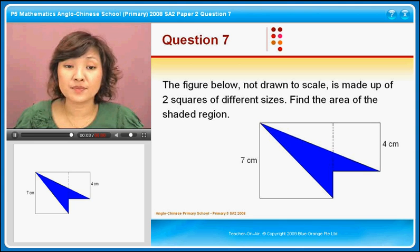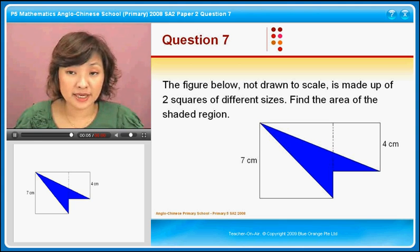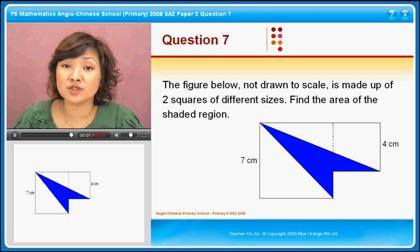Let's move on now to question 7. The figure below, not drawn to scale, is made up of two squares of different sizes.